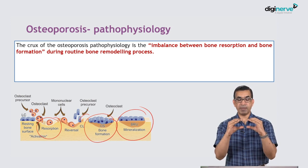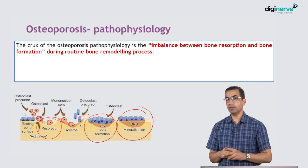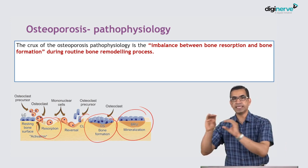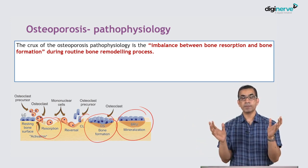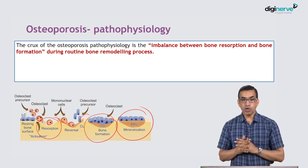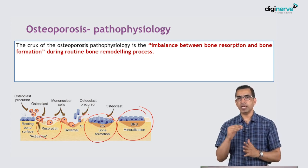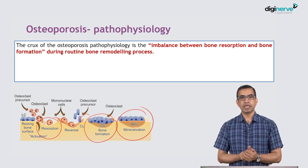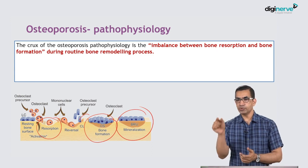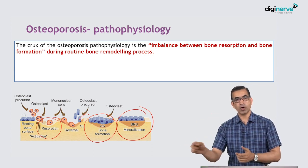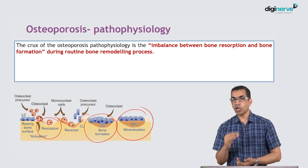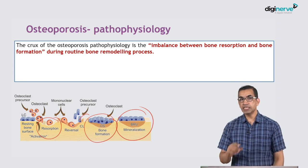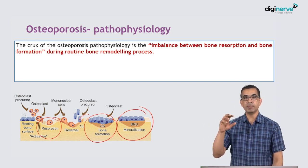Whatever peak bone mass has been attained, the activity of osteoblasts and osteoclasts is to maintain that balance — the higher the balance, the longer it goes on. In osteoporosis, beyond a certain age, with lack of hormonal protection and other factors, the osteoclasts continue to remove bone at a normal or accelerated rate, whereas osteoblasts do not deposit or replete the same amount of bone, gradually leading to a decrease in peak bone mass.